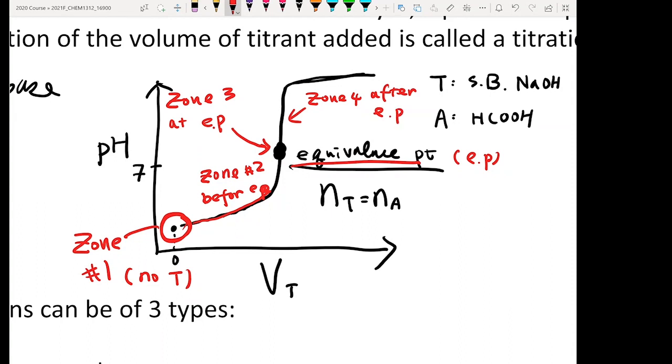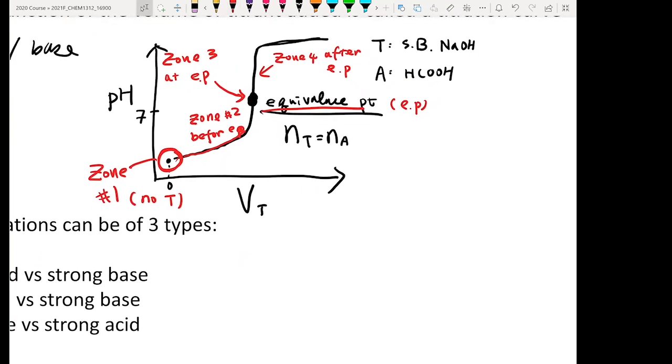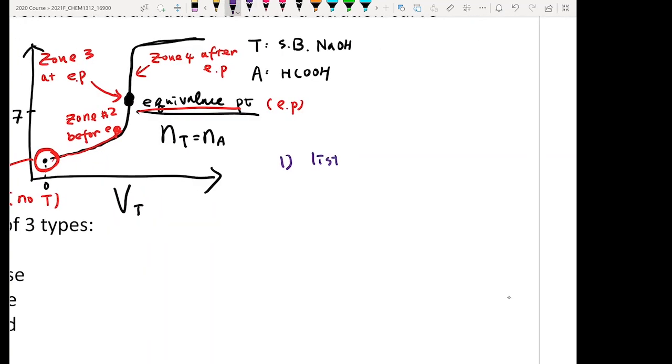So what we are going to do today is actually if I give you a system, a titration system, can you calculate the pH at these four different zones? And then the general approach is to solve a question like this. Follow four steps. These are the four steps you will always want to do when you encounter any questions in chapter 14. Step number one, you want to know what is your titrant? What is your analyte? So that you will know what solution you have in the very beginning.